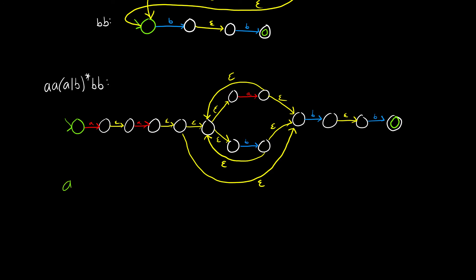What if we did use some of the Kleene star? So A, A, then B, A, B, A, then B, B. A, A gets us to this epsilon, we follow the transition into the Kleene star machine and follow our B. We follow B, get back, get an A, go back to the start state, get a B, go back, get an A, go back, and then we go to B and then epsilon and then B to the accept state — so that's accepted as well.